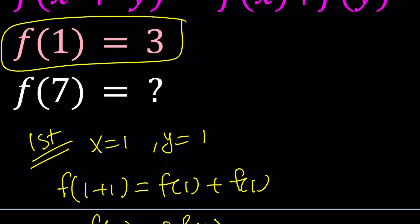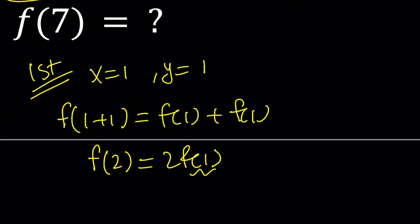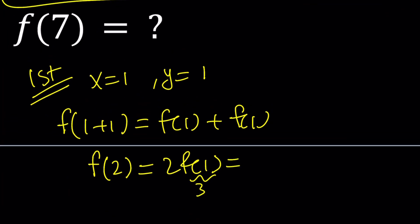This gives us f of 2 equals f of 1 plus f of 1. But if you add the same thing twice, it's just 2 times that. We do know f of 1 is equal to 3 because it's given.